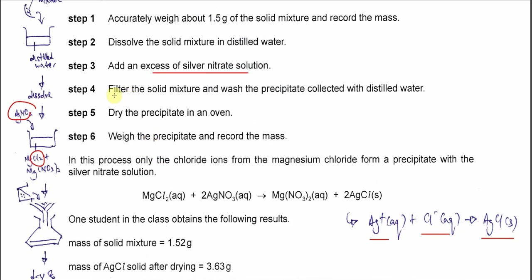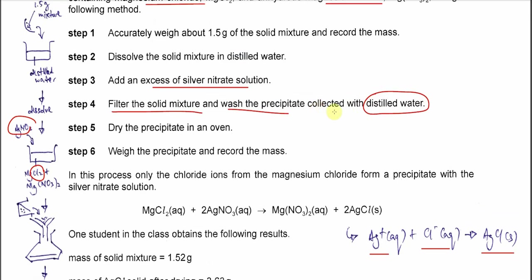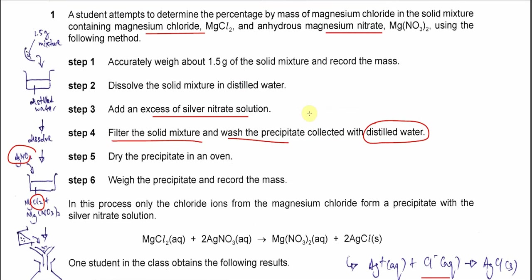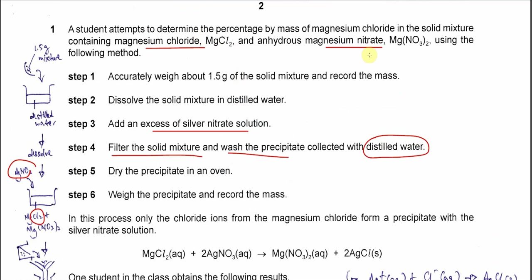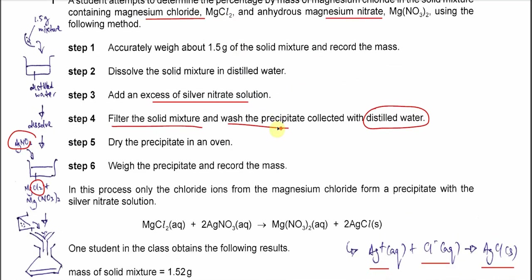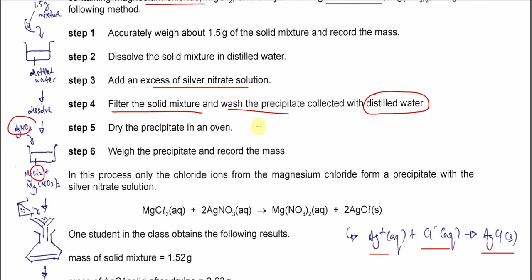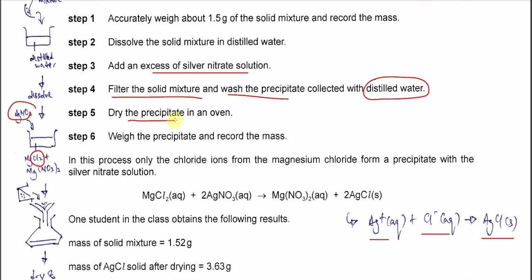After that, we need to filter the solid mixture and wash the precipitate with distilled water. The washing part is very important because the solid might be contaminated with other salts. So we use distilled water to wash the silver chloride. Those salts like magnesium chloride and magnesium nitrate will then be removed. After that, dry the precipitate in the oven and weigh it to record the mass.